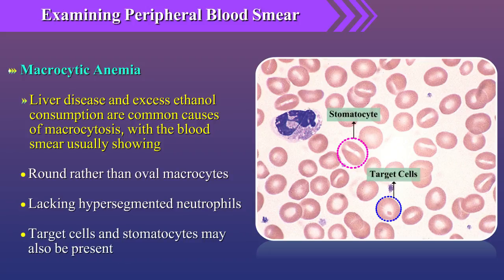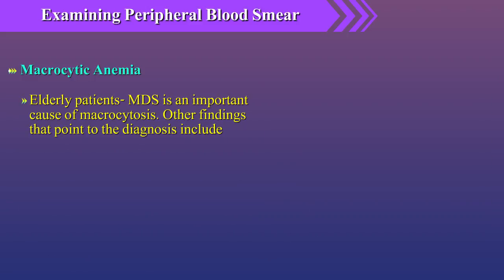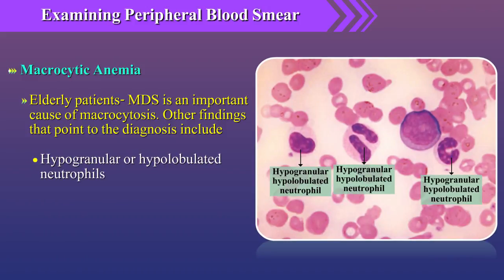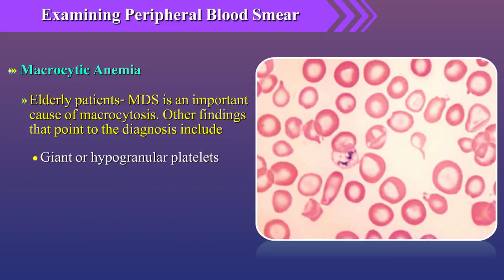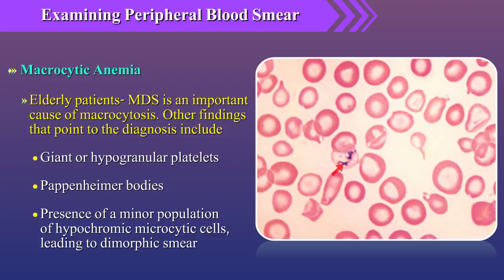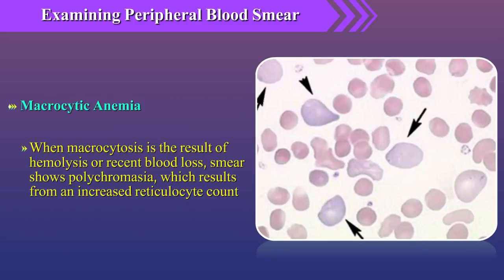Target cells and stomatocytes may also be present. In elderly patients, myelodysplastic syndrome is an important cause of macrocytosis. Other findings pointing to that diagnosis include hypogranular or hypolobulated neutrophils, blast cells, giant or hypogranular platelets, Pappenheimer bodies, and presence of a minor population of hypochromic microcytic cells leading to a dimorphic smear. When macrocytosis is the result of hemolysis or recent blood loss, the smear shows polychromasia resulting from an increased reticulocyte count.